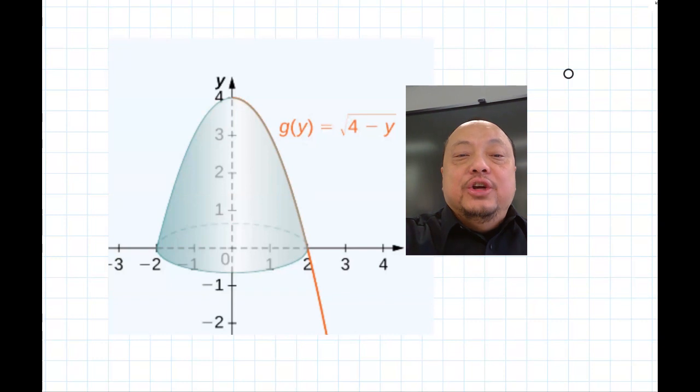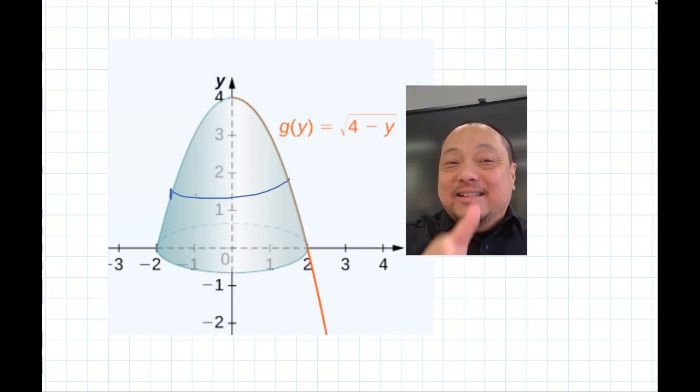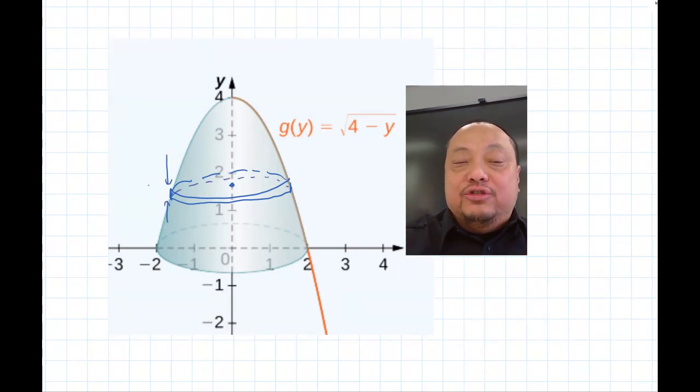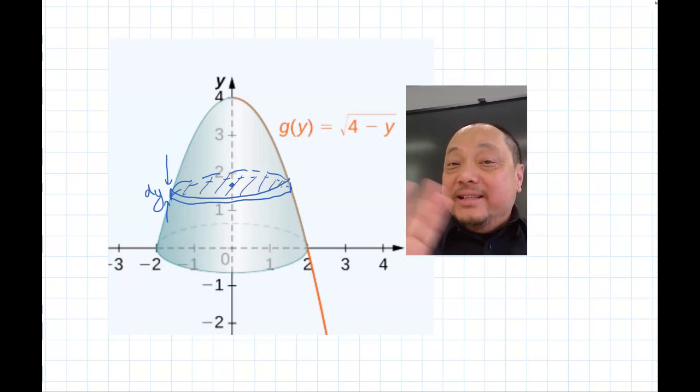If you are here, you probably already went through the disk method, also called the washer method. The disk method slices the solid into thin disks. Each disk is a short cylinder of tiny little height of either dx or dy. The volume of each disk is base area times height, where the base area is the area of a circle or the difference of two circles. Then you add all the disks together by taking an integral.